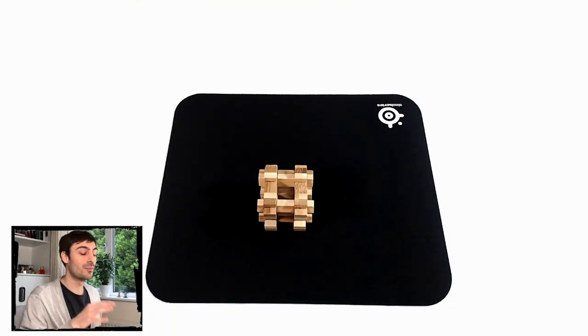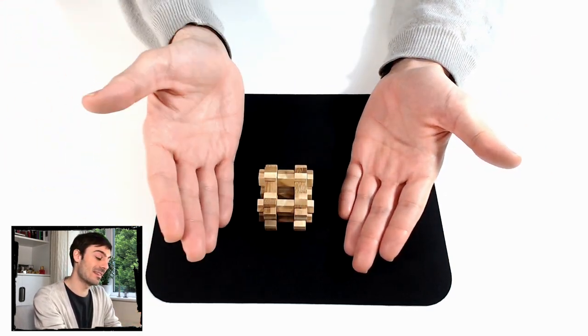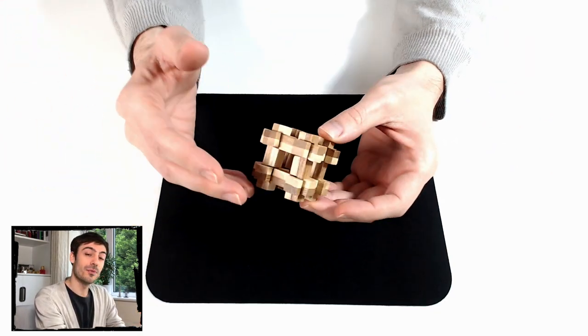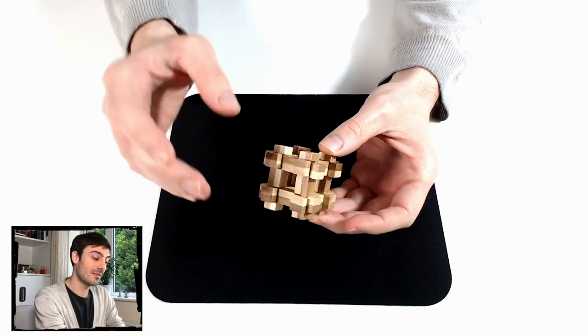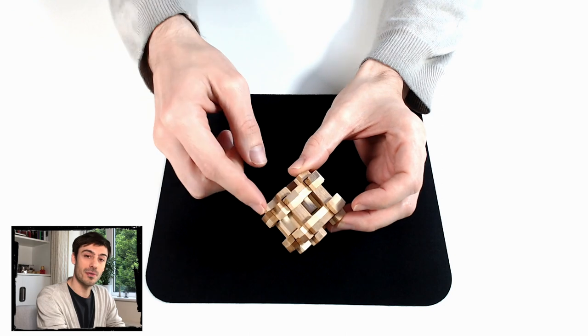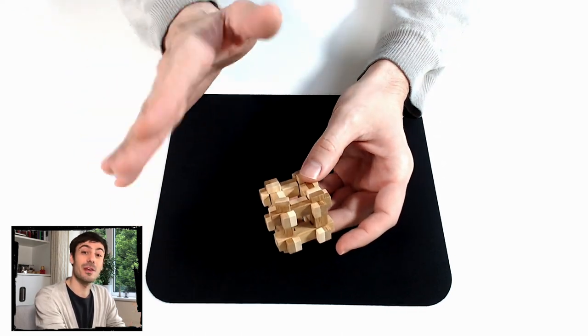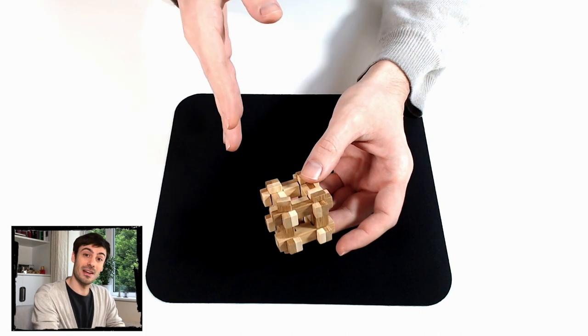And here is our nice wooden puzzle. The name of it is the cage and really it looks so interesting. I mean look at it. It's made of 12 wooden pieces that are all connected to each other. They are connected three by three to each other. And that's very interesting because I'm sure it will be a challenging puzzle.